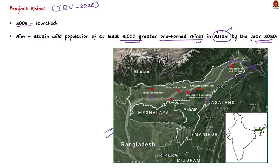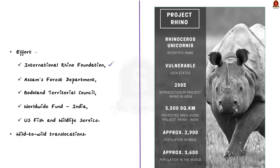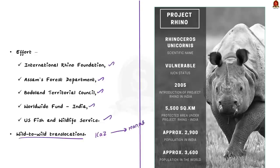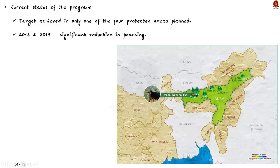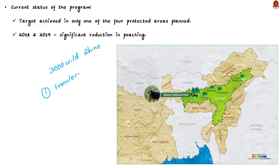This is a collaborative effort between the International Rhino Foundation, Assam's Forest Department, Bodo Territorial Council, Wildlife Trust of India, and the US Fish and Wildlife Fund. A significant part of this program is wild-to-wild rhino translocation — moving rhinos from densely populated parks like Kaziranga to parks in need of more rhinos like Manas. The program is fairly successful in achieving the target of 3,000 wild rhinos, but in the translocation sphere it largely failed — only one translocation at Manas National Park occurred. Wildlife crime in Assam has also been brought down significantly from 2018 to 2019.